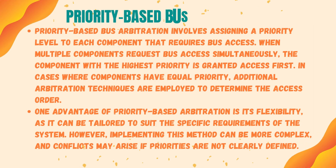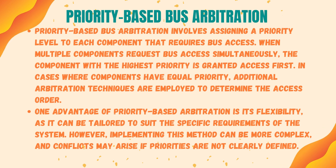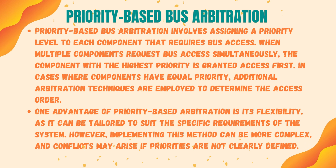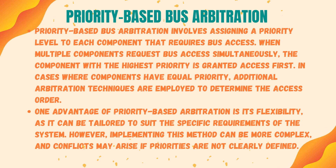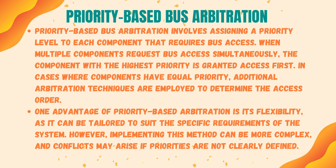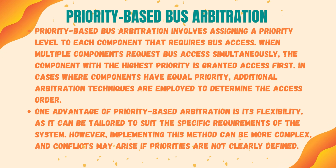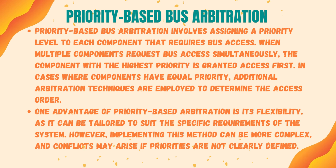Priority-based bus arbitration involves assigning a priority level to each component that requires bus access. When multiple components request bus access simultaneously, the component with the highest priority is granted access first. In cases where components have equal priority, additional arbitration techniques are employed to determine the access order. One advantage is its flexibility, as it can be tailored to the specific requirements of the system. However, implementing this method can be more complex, and conflicts may arise if priorities are not clearly defined.